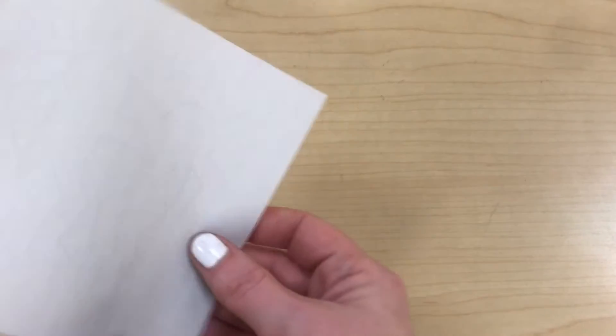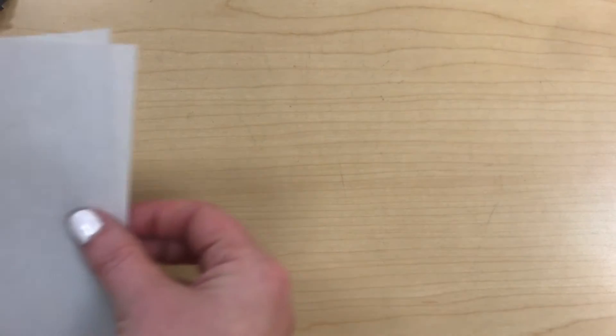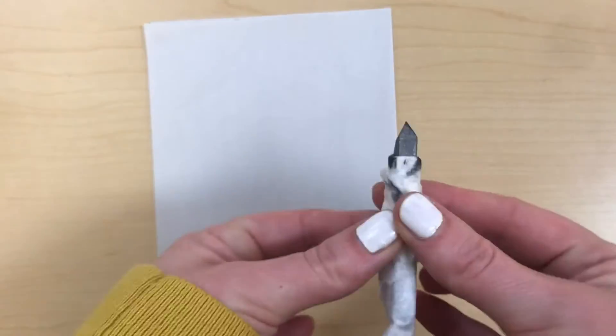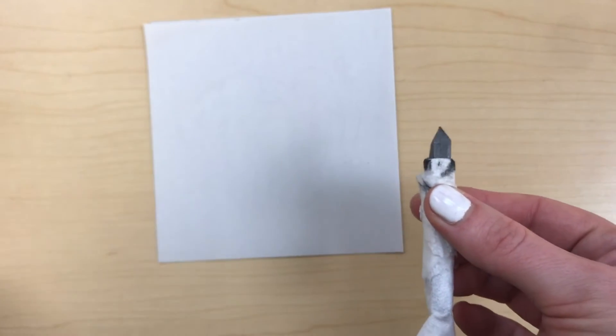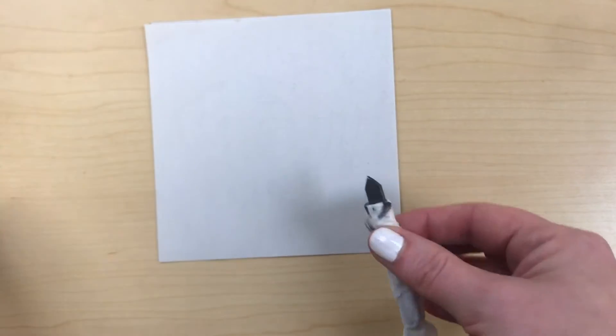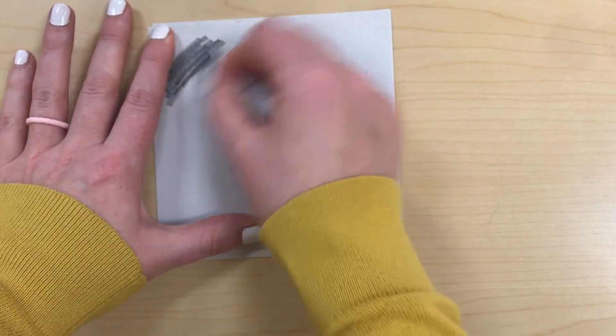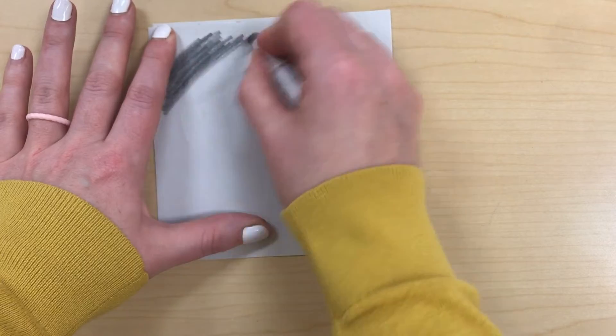I'm going to take my newsprint and flip it over to the back and I'm going to take a piece of graphite, which is what's inside a regular pencil. So if you don't have graphite, just use a pencil.